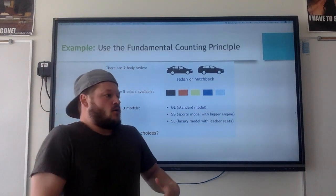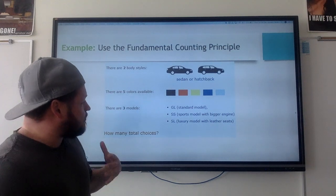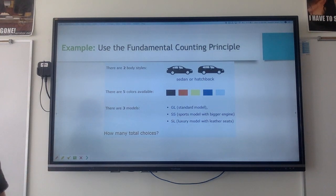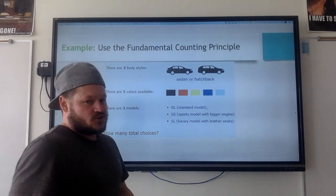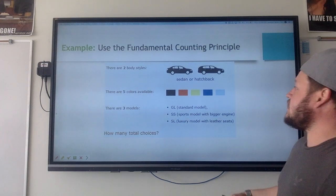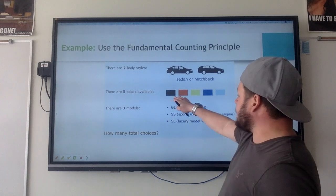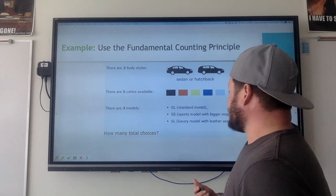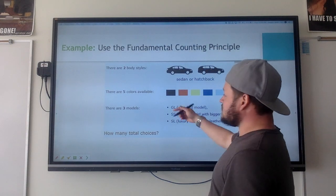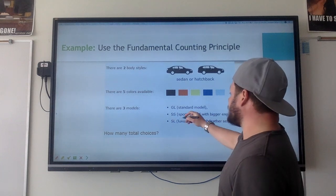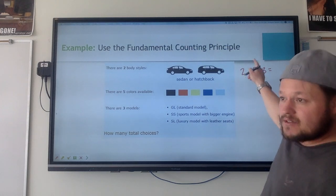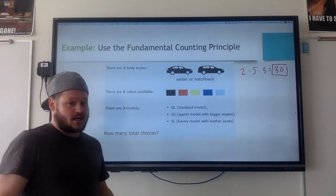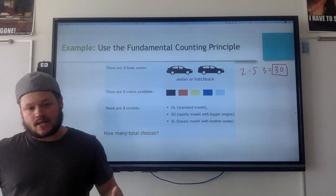Here's an example using fundamental counting principle to find how many different car choices there are. We have two different styles — a sedan or a hatchback — five different colors available, and three models. It's going to be two times five times three. Two times five is ten, ten times three is thirty, so there are thirty different options. That's it for fundamental counting principle.